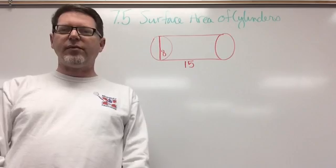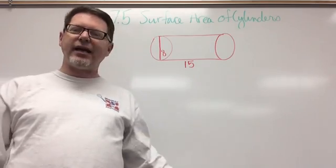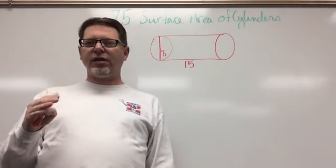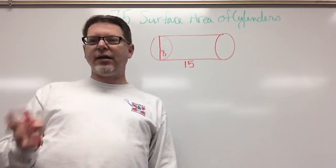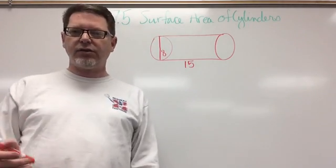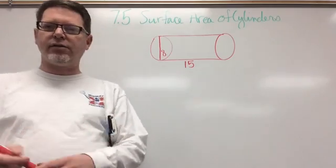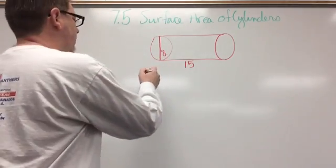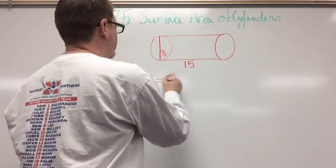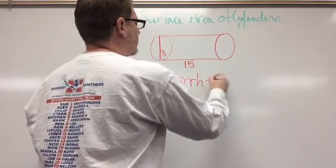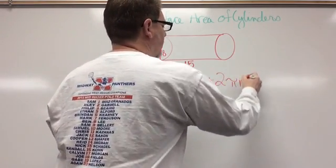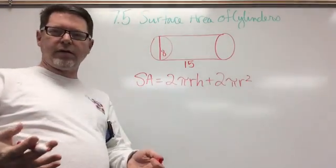In this case, for this problem, we have a cylinder that's laying on its side, and I'm given the diameter of the cylinder, which is 8, and the height of the cylinder, which is 15. So we need to find the lateral area and the surface area. So I'm going to just write the formula down. SA equals 2πRH plus 2πR squared. And let's fill in our numbers.